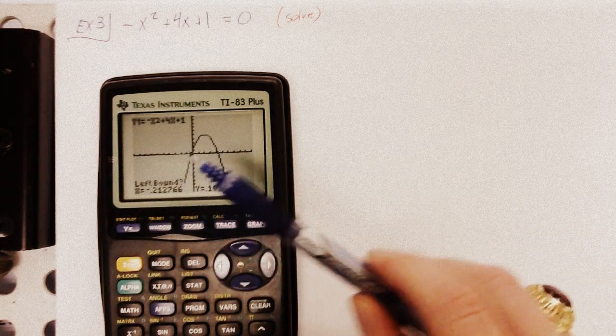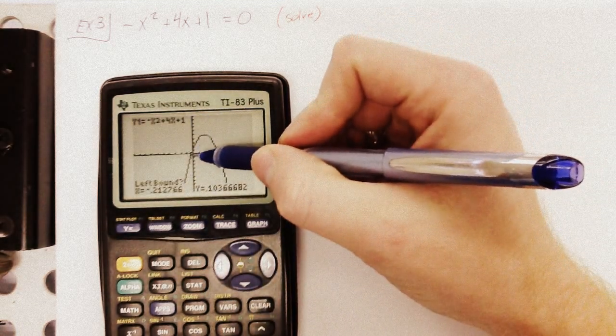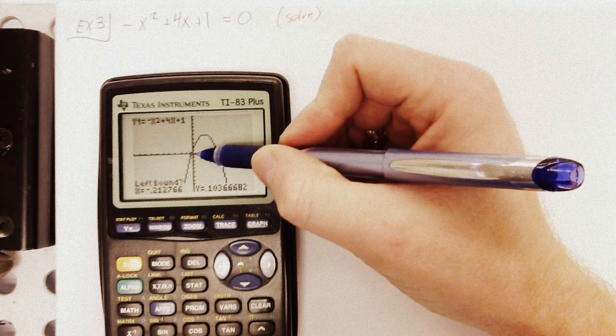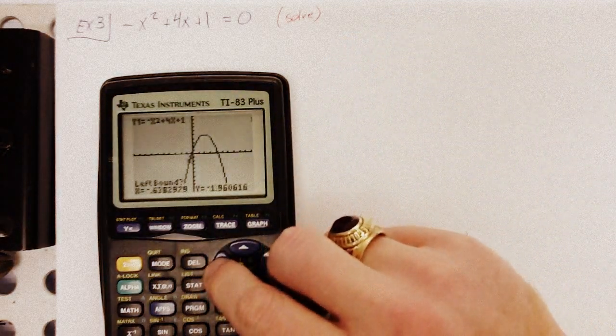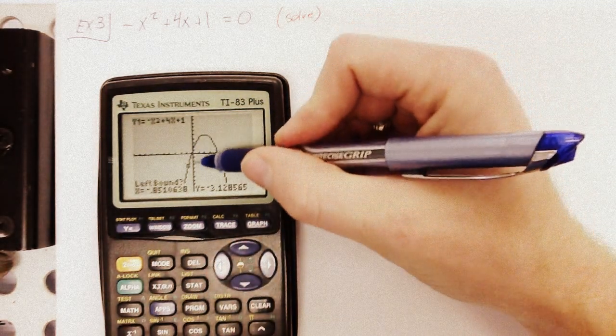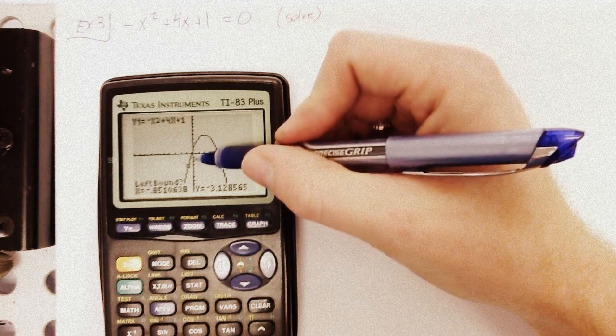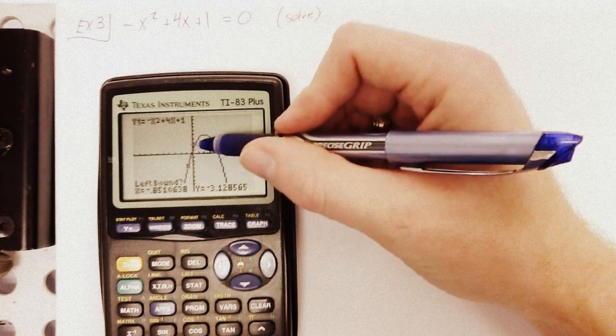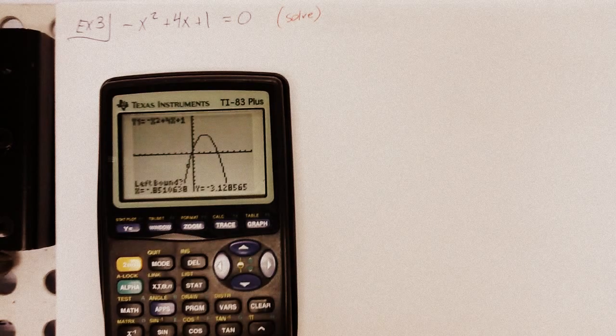It's going to ask me for a left bound. All right. Well, imagine that, you know, this is your, this is where it crosses the x-axis. If you're not sure if you're on the left, well, I'd say that x is to the left of this little line I'm drawing right now with my pen. Once you're convinced it's on the left, hit enter.